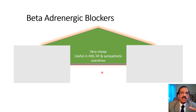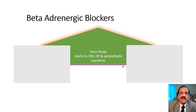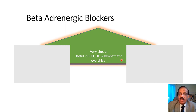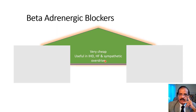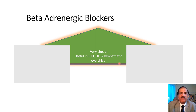Most guidelines do not mention beta blockers as first-line treatment, although in the real world they are still used as first-line, especially in our country, because they are very cheap and useful if there is co-existing ischemic heart disease, co-existing heart failure, or sympathetic overdrive. Sympathetic overdrive — characterized by anxiety, palpitations, and perspiration — is a feature that can occur in some hypertensive patients, and beta blockers are preferable in that scenario. Most guidelines say beta blockers can be used at any stage when there is a compelling indication, usually at small doses and in addition to other antihypertensive drugs.